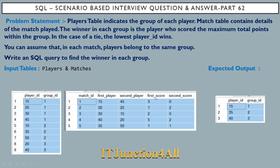Whatever score points have been scored by the first player is the first score, and the points scored by the second player is the second score. You can assume that in each match, players belong to the same group. From these two input tables, we have to write a SQL query to find the winner in each group. If multiple players score the same points, the player with the lowest player ID will be the winner.